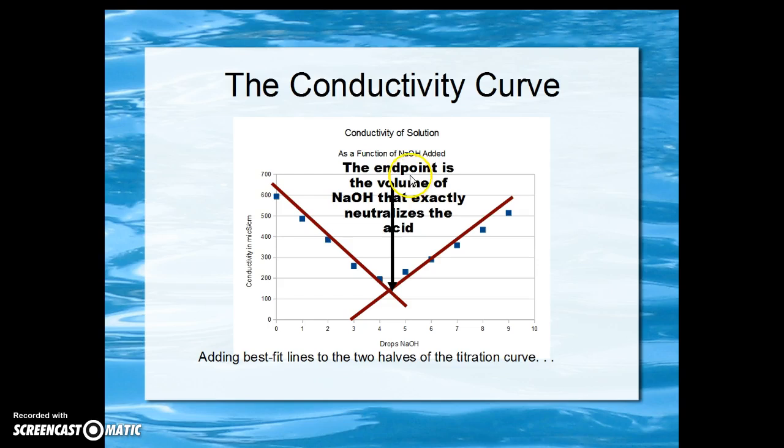The endpoint of this titration is the volume of sodium hydroxide that exactly neutralizes the acid. You will note that it may not occur at one of the points that we are actually plotting, but rather at the intersection of these two straight lines.